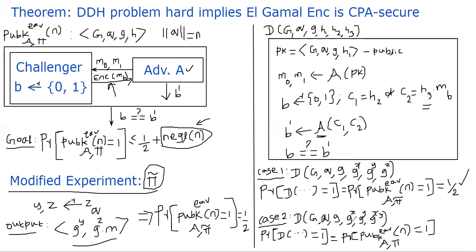Now consider Case 2: we call D with (G, Q, g, G^X, G^Y, G^(XY)). In that case, the probability that D outputs 1 is the same as the probability that A's guess B prime equals B, meaning the behavior of A here is the same as the behavior of A in the original experiment where Pi is unmodified. Therefore, the probability that D outputs 1 equals the probability of the original public key eavesdropping experiment outputting 1.